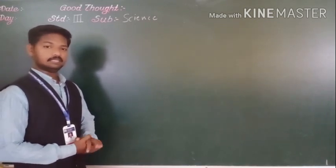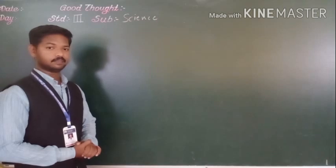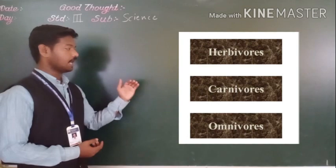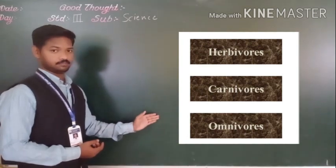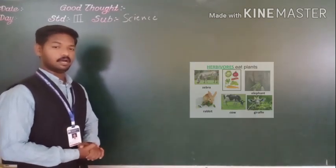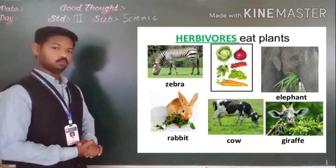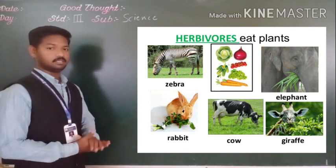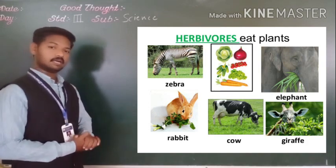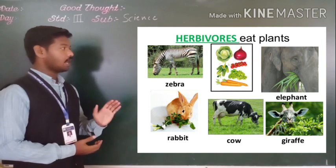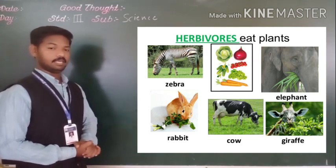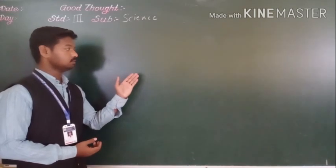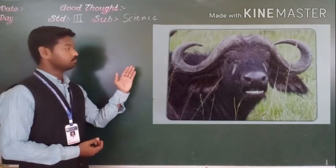So mainly there are three types of animals. They are herbivores, carnivores and omnivores. So first of all we will learn about herbivores animals. Herbivores animals are those who eat plants. They are also known as plant eating animals. Examples of herbivores animals are cow, goat, buffalo.